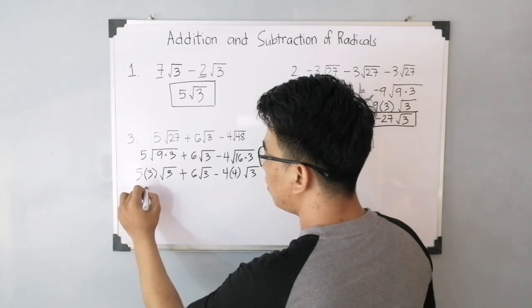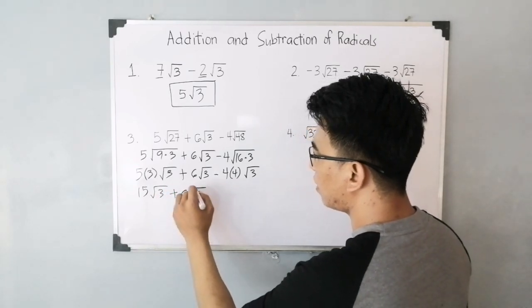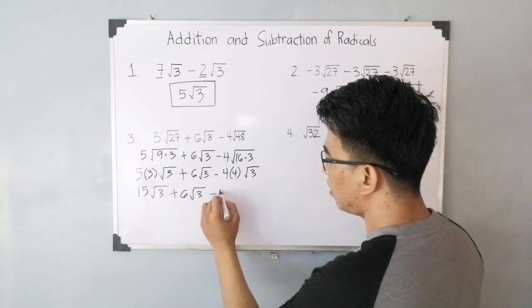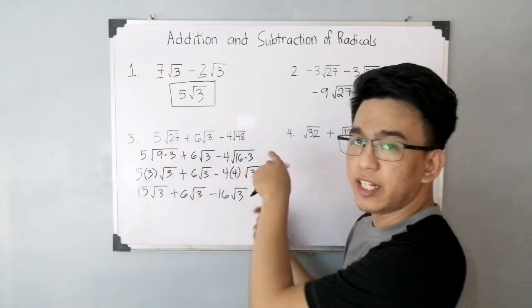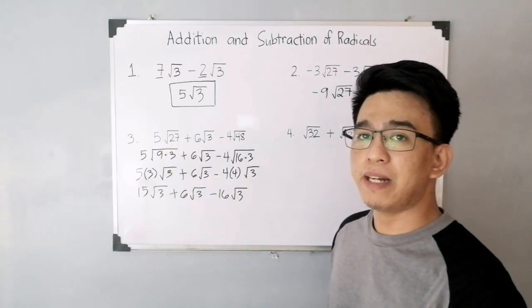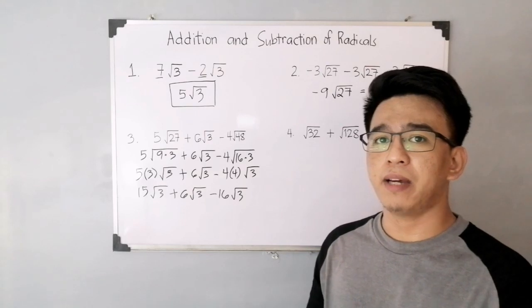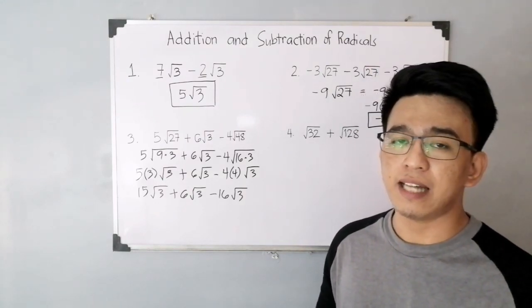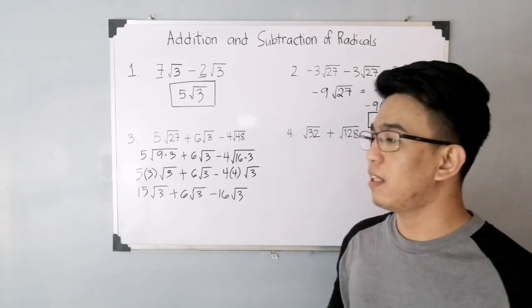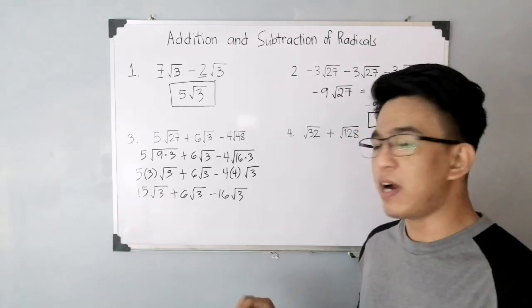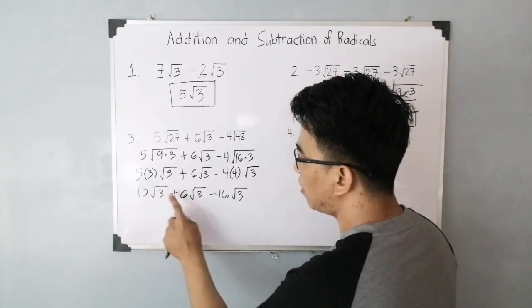And simplifying this, it will give you 15 square root of 3. That's 5 times 3. Plus 6 square root of 3. And here we have negative 16 square root of 3. Now, as you can see, from the given above, we have different radicals. But by extracting the roots or by simplifying the radical, we achieved common radicals. So one of the key factors here: to be successful in adding and subtracting radicals, you need to know how to simplify radicals. Again, we have a video about that. You can watch it. And since we have the common radicals, we can easily add and subtract the numbers.